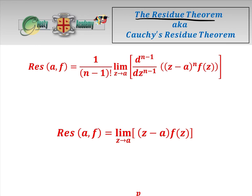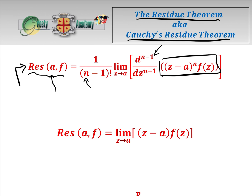In this video we're going to be looking at the residue theorem, also known as Cauchy's residue theorem, and we're going to go through three formulas here which look horrific but aren't. The residue of a point of singularity a on a function f is equal to 1 over (n minus 1) factorial, where n is the order of the singularity, times the limit as z approaches a of the (n minus 1)th derivative. It looks horrible but it isn't.